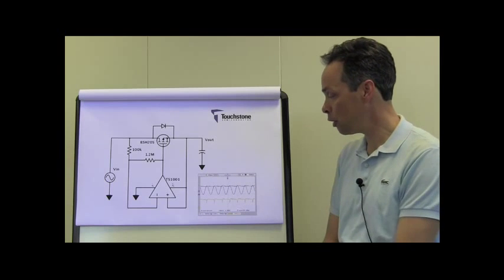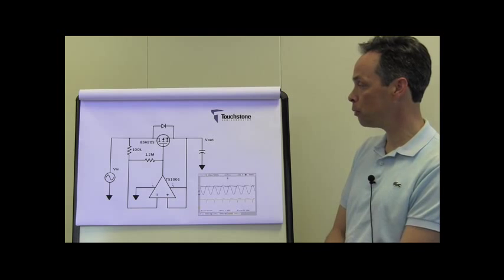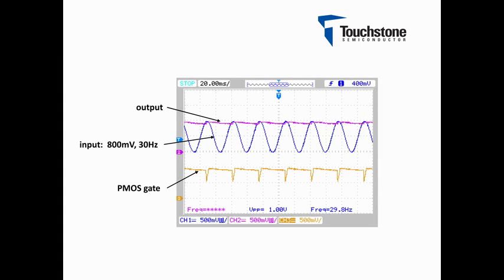In fact, if we look at this time domain picture of the waveforms, there is an 800 millivolt input sine wave at 30 Hz. That's the blue line in the middle. And then there is a purple line that follows the peaks of the input voltage. As you can see, there is barely any droop of that peak value at all. The yellow line at the bottom is the voltage at the gate of the PMOS, or the output of the operational amplifier.